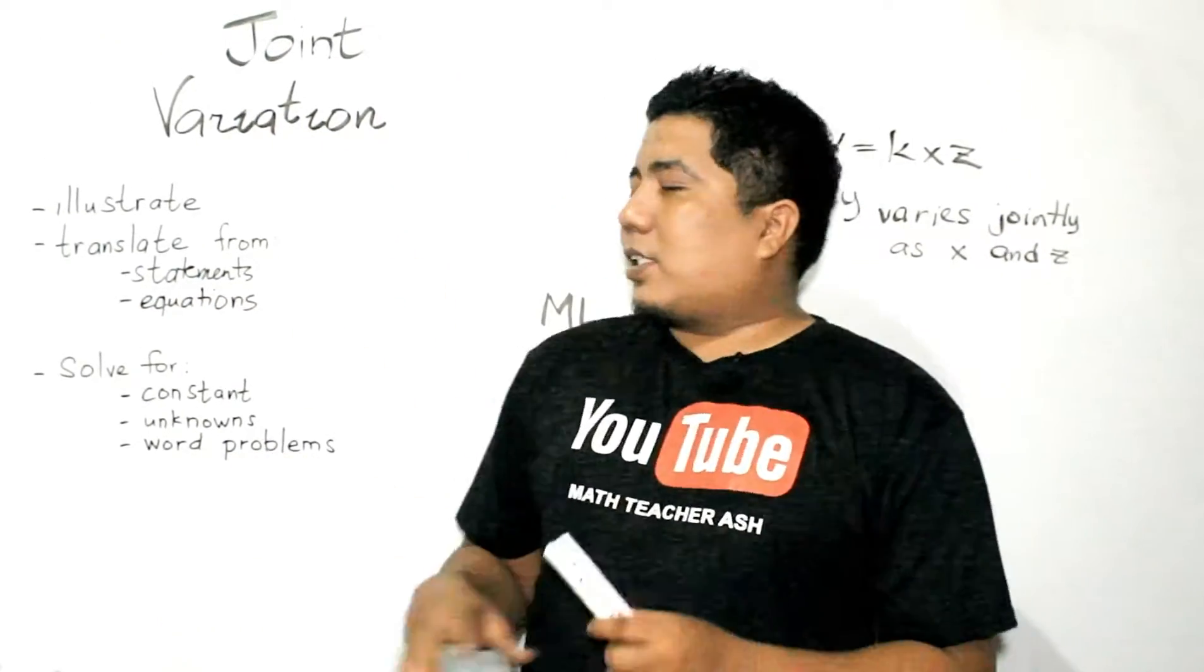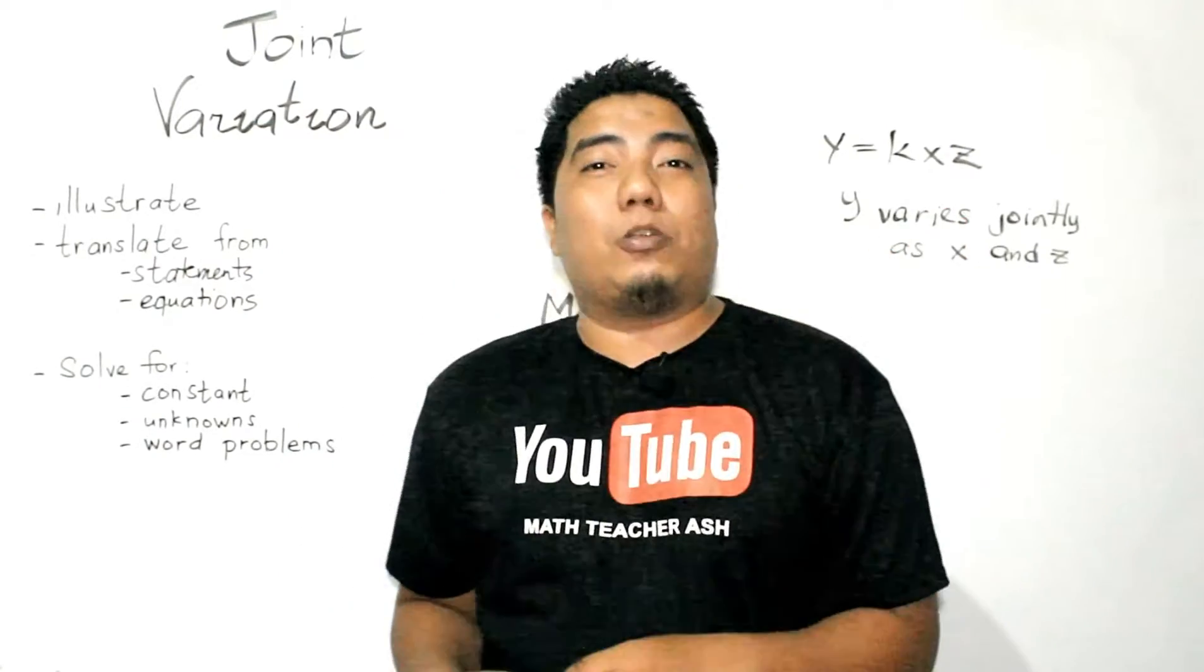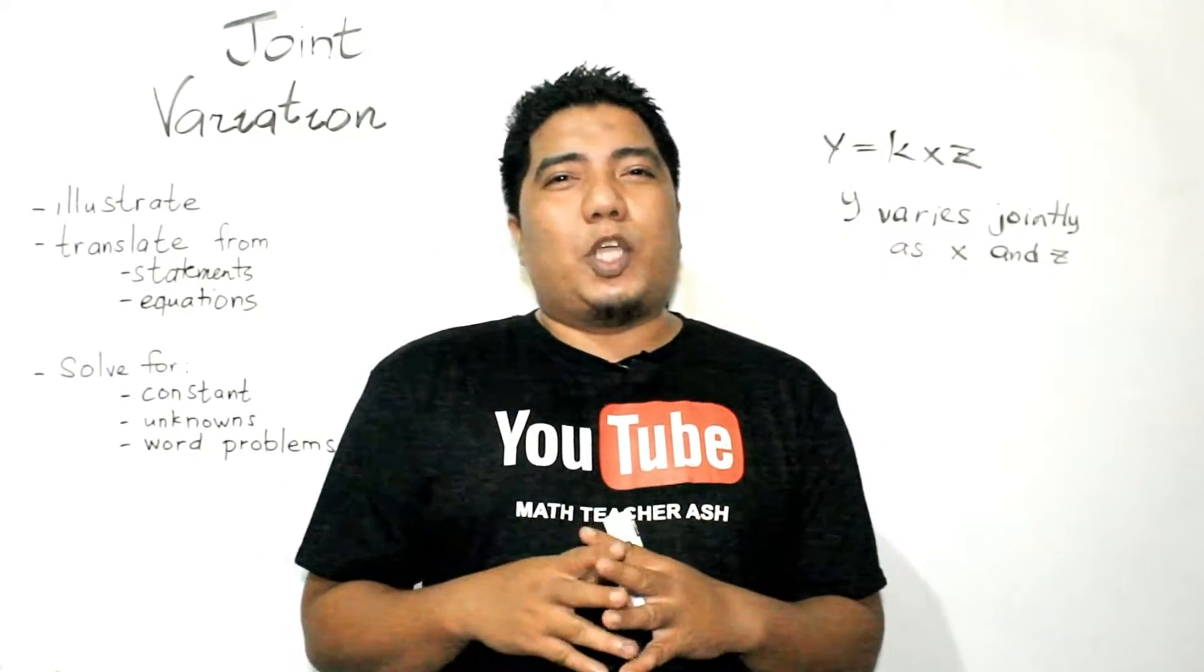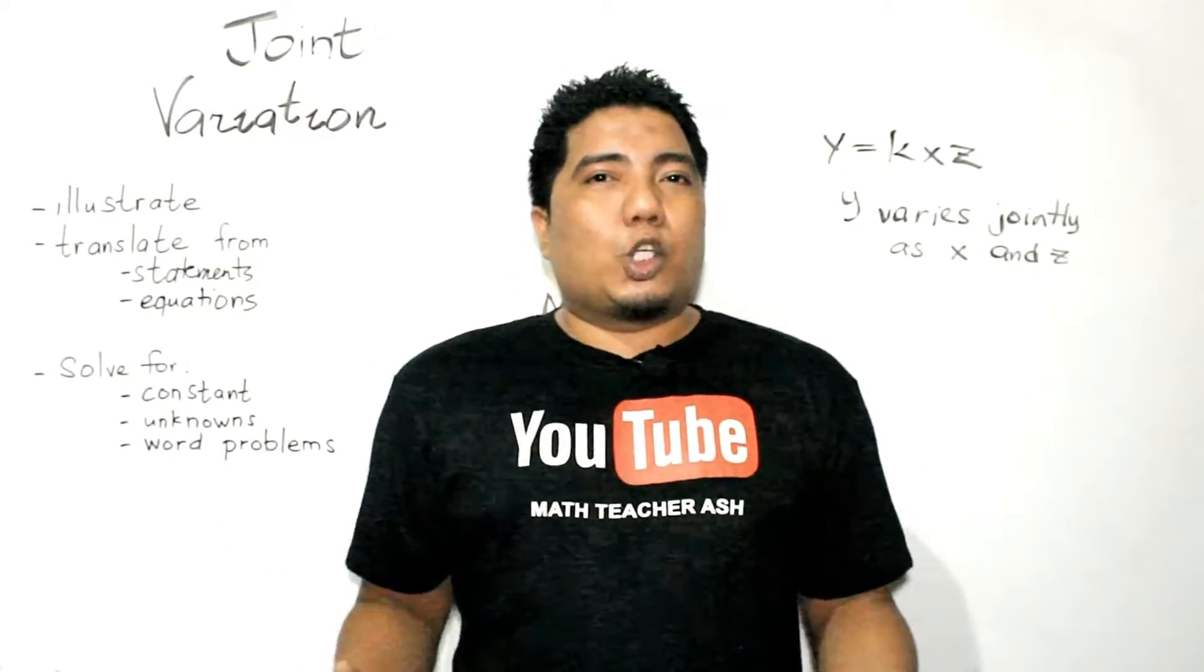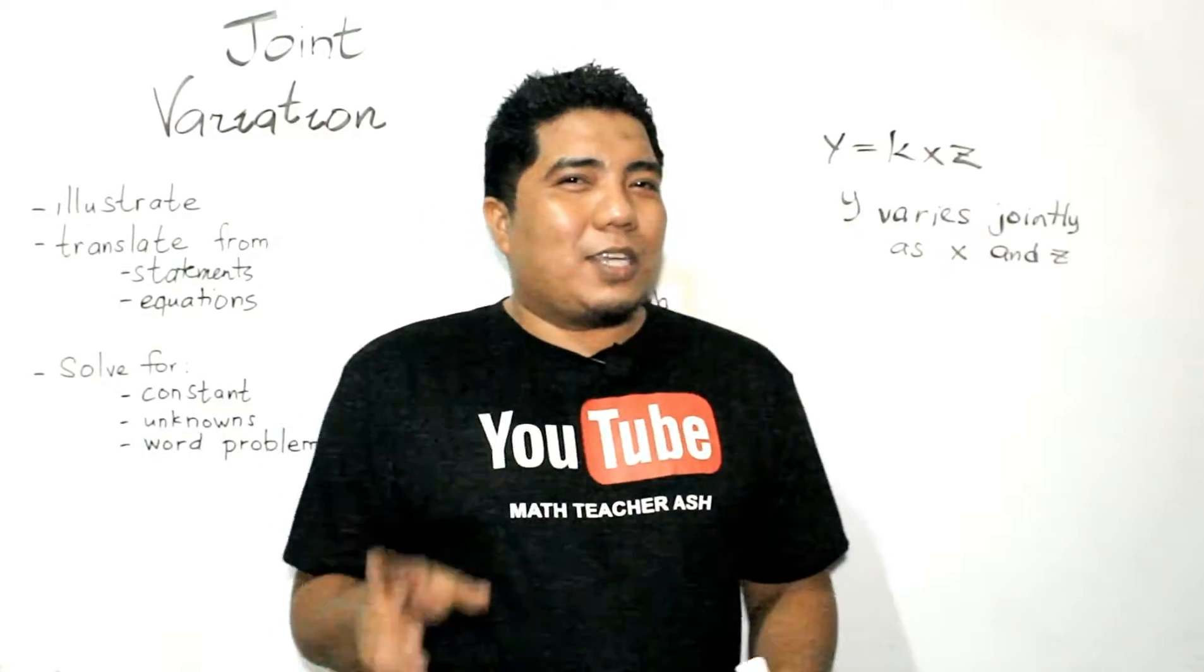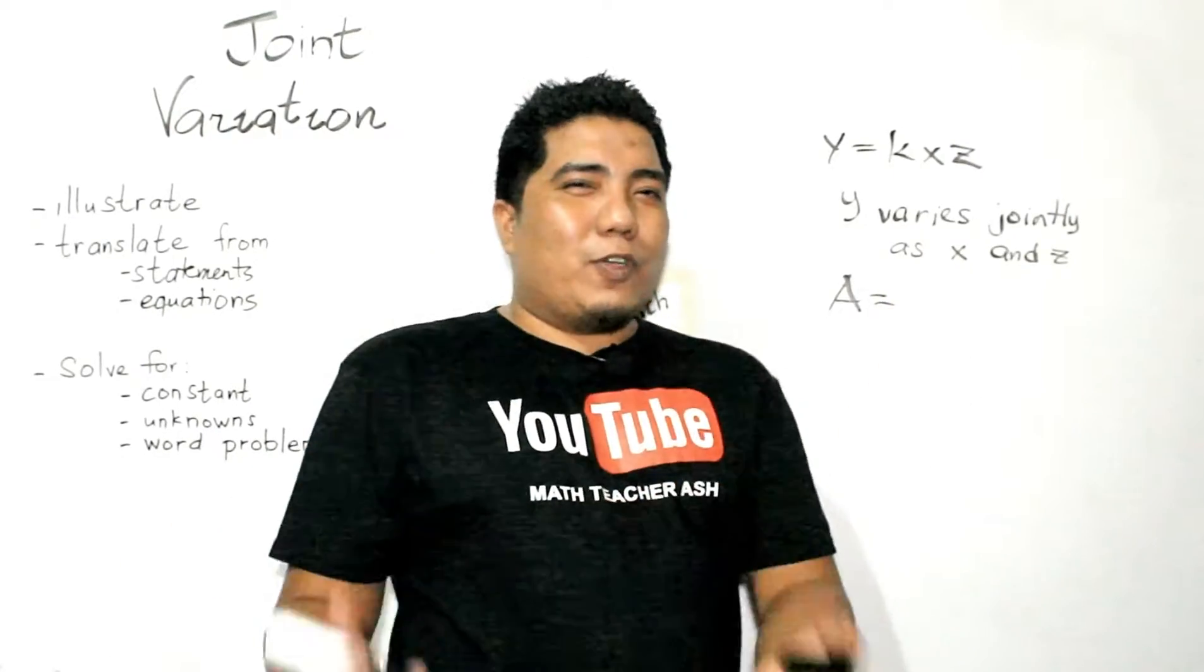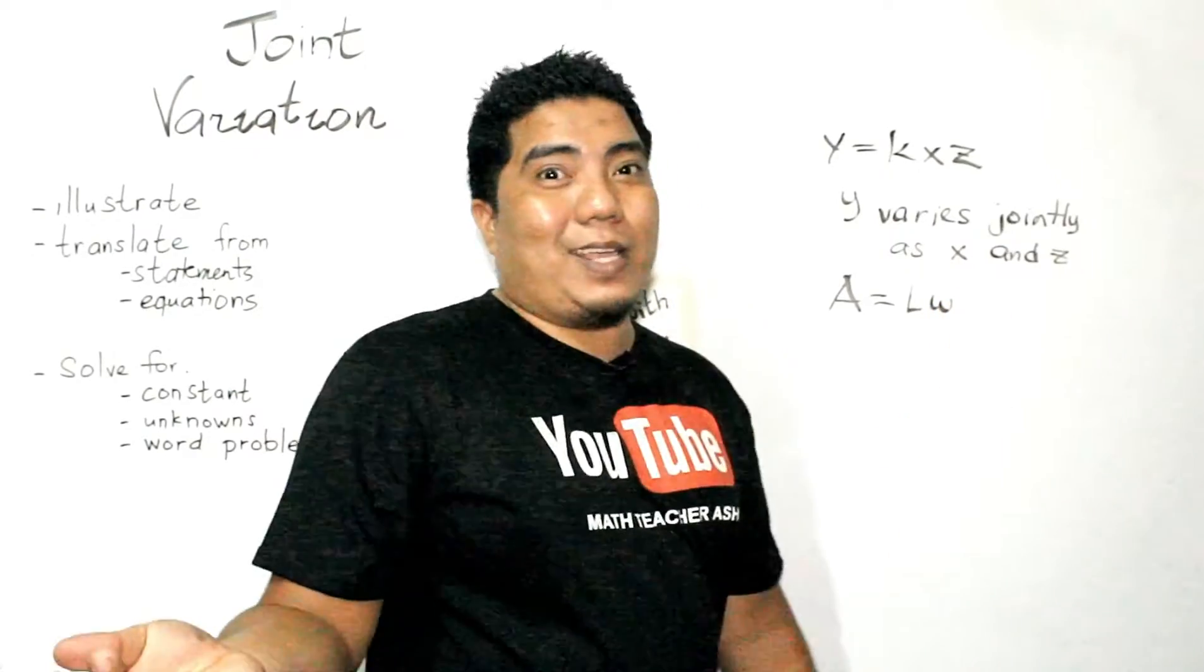So, the question is, what is the statement to be considered in joint variation? What are the equations? In terms of equations, there are a lot of equations in the real life setting that show a joint variation. Let's consider a formula for the area. The area of a rectangle. If you could remember from your elementary days, the area of a rectangle is length times width, right?